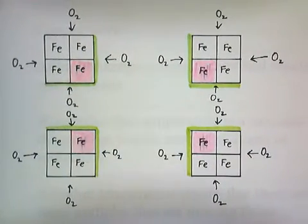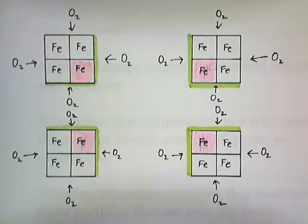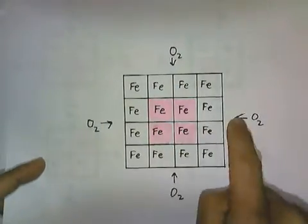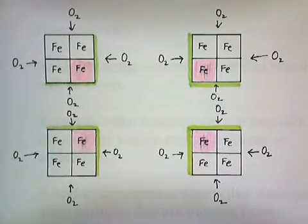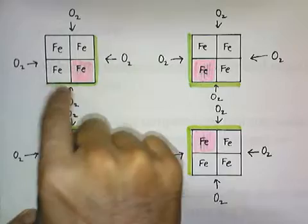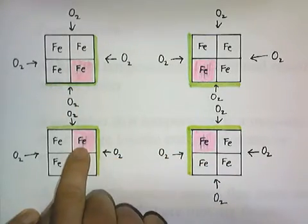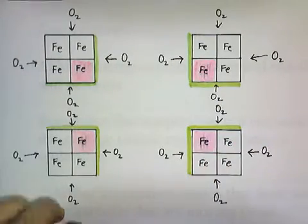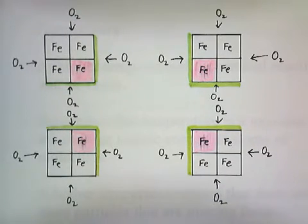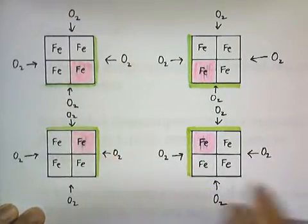Now if we break the block of iron into four pieces, we increase the surface area and expose more iron atoms to oxygen. Oxygen can now collide with eight new surfaces, highlighted in green. The iron atoms highlighted in pink can now react with oxygen. The surfaces that used to be on the inside are now exposed to the outside, so oxygen can access more surfaces and collide with those iron atoms. Since we now have more collisions between iron and oxygen, the reaction will occur more rapidly. Increasing the surface area of the solid increases the reaction rate.